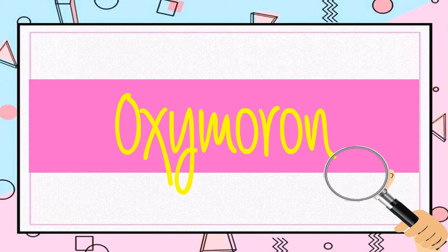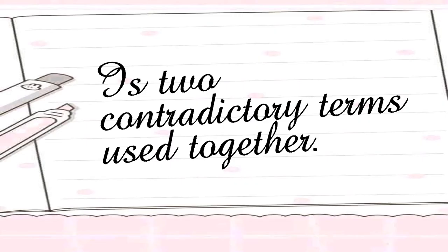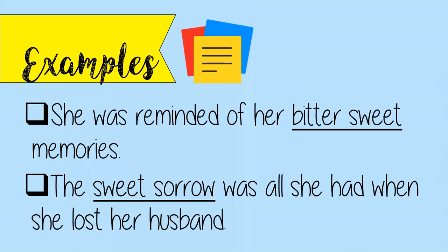Oxymoron is two contradictory terms used together. Examples: she was reminded of her bittersweet memories. The sweet sorrow was all she had when she lost her husband.